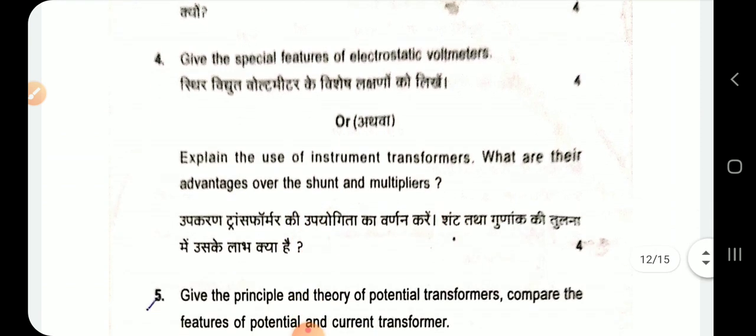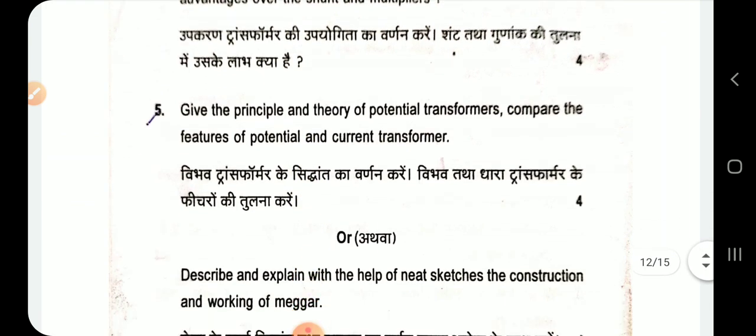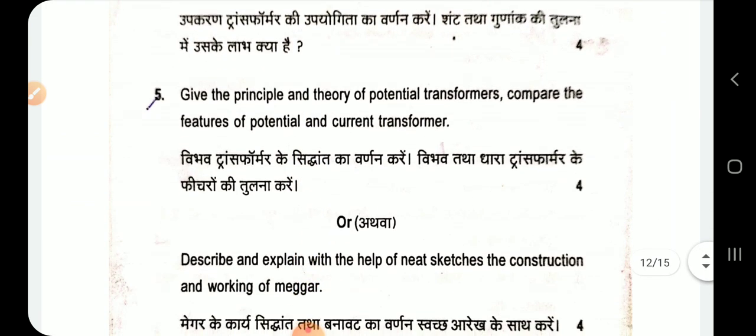Give the special features of an electrostatic voltmeter. Explain the use of instrument transformers. Describe their advantages over shunts and multipliers. Give the principle and theory of potential transformers.